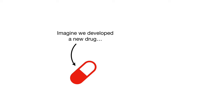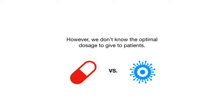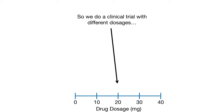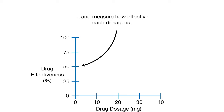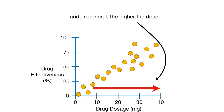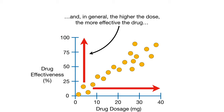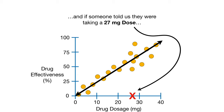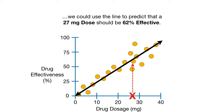Imagine we developed a new drug to cure the common cold. However, we don't know the optimal dosage to give patients. So we do a clinical trial with different dosages and measure how effective each dosage is. If the data looked like this, and in general the higher the dose, the more effective the drug, then we could easily fit a line to the data. And if someone told us they were taking a 27-milligram dose, we could use the line to predict that a 27-milligram dose should be 62% effective.